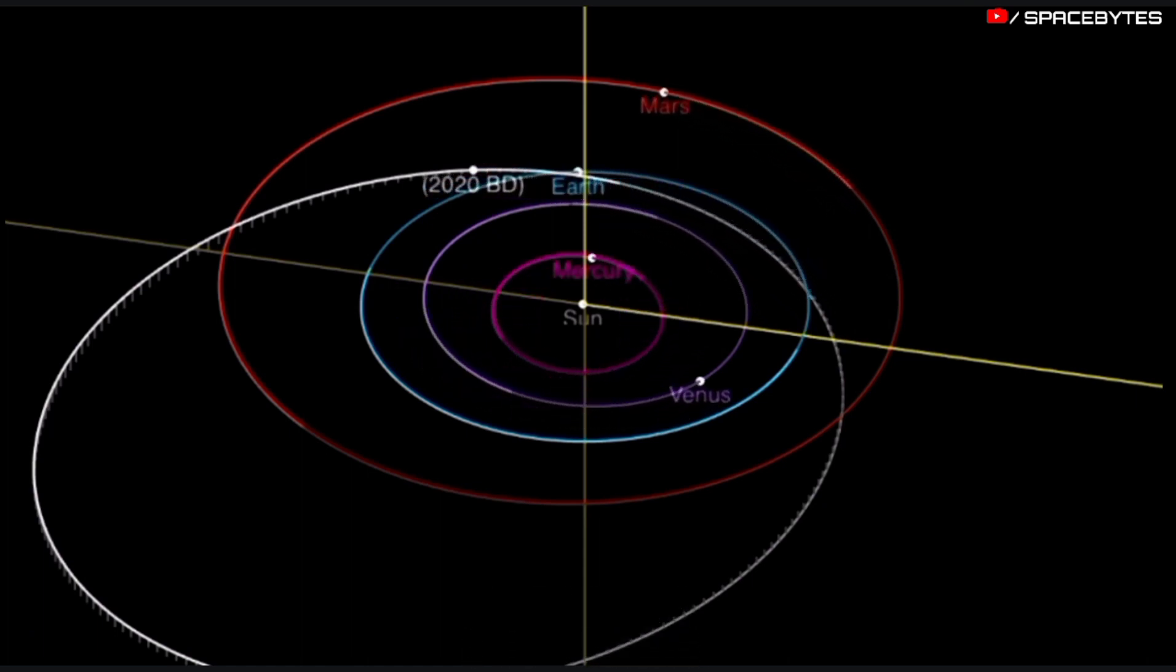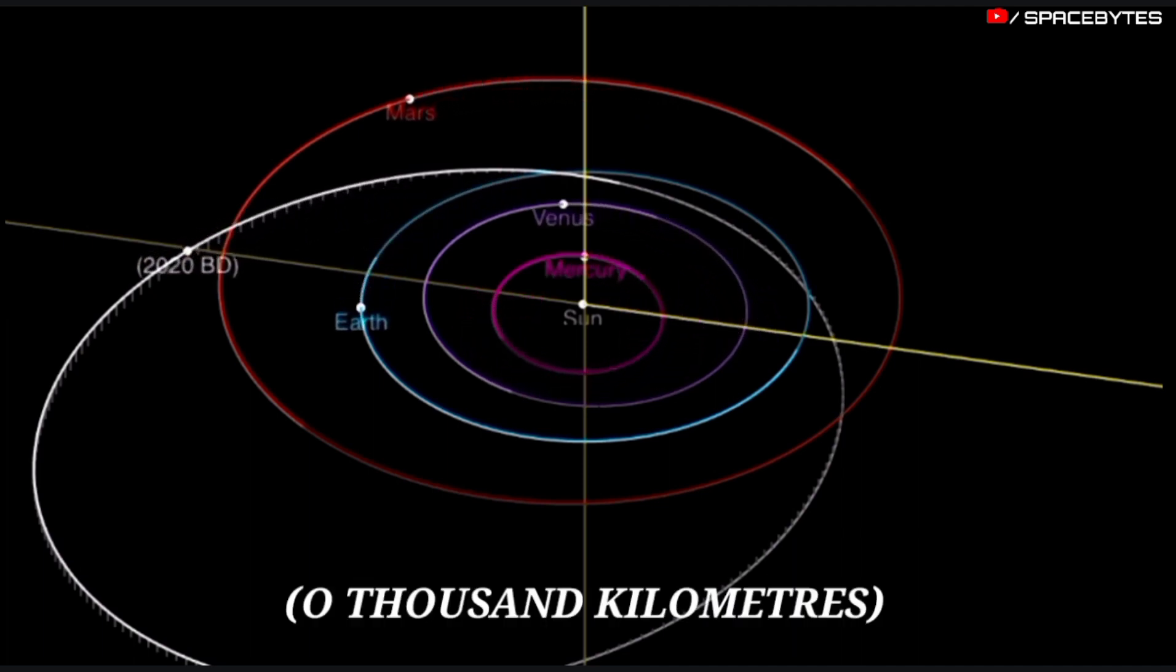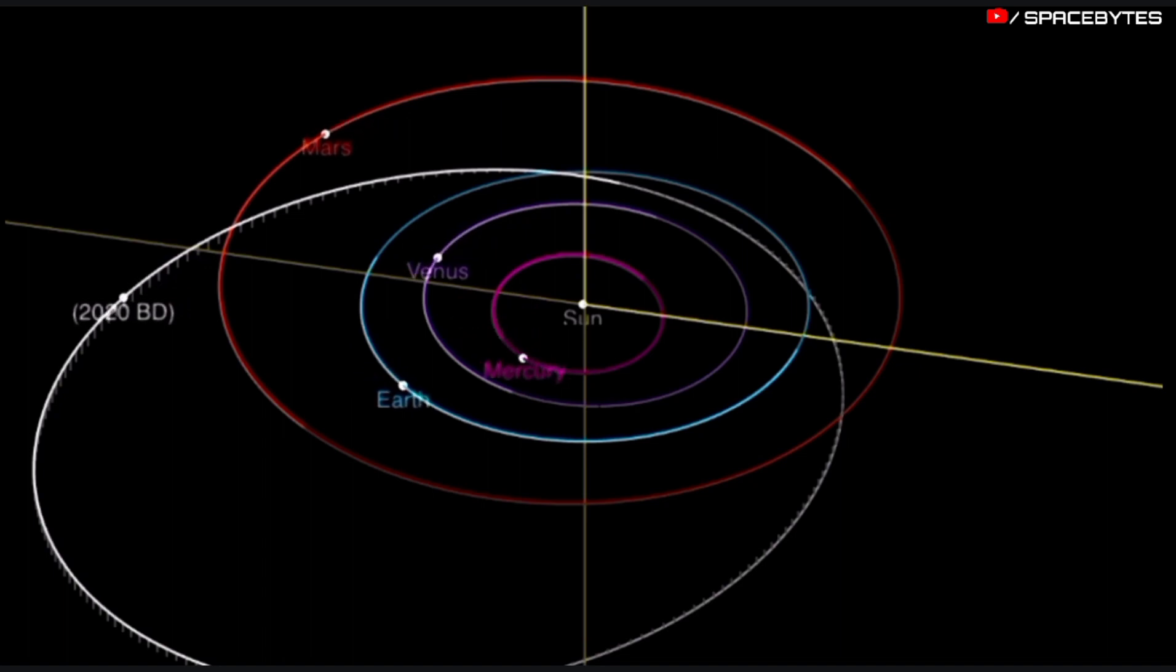The distance of Asteroid 2020 BD from Earth is currently 0,000 kilometers, equivalent to zero astronomical units.